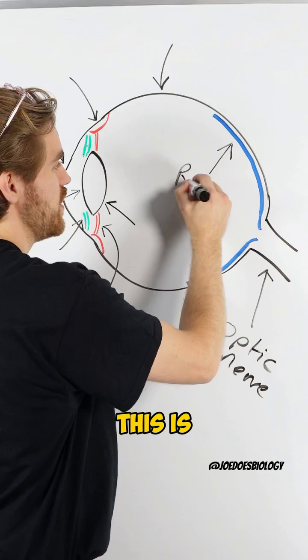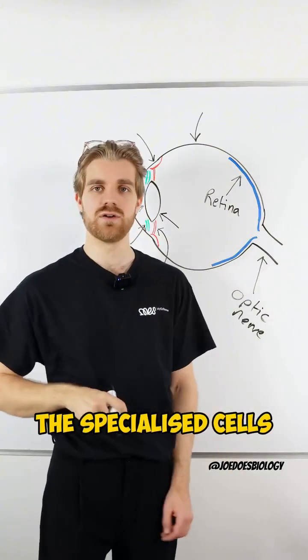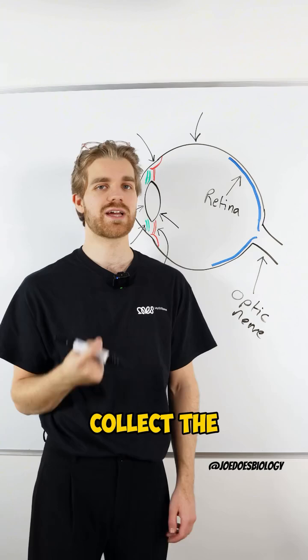This is the retina. This is where the photoreceptors, the specialized cells such as rods and cones that collect the light, are.